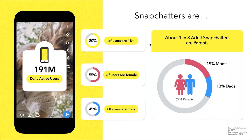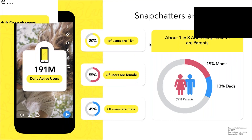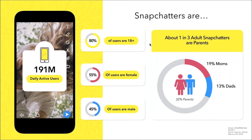On average, a Snapchatter is in the app for about 30 minutes a day. If you look at our under-18 audience, they're in it for over 40 minutes — that's two episodes of Friends every single day. Not only are they spending a lot of time on the app, but they're jumping in and out over 25 times a day, which is more than once for every hour they're awake.